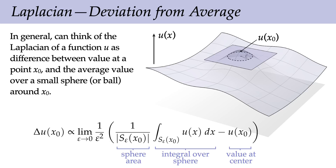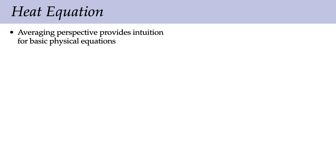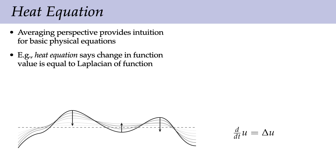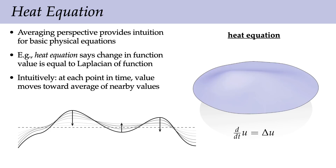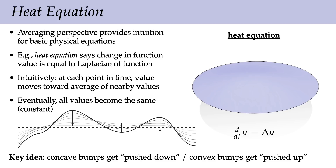This point of view is really helpful for understanding physical behavior. The heat equation says that the change in a function value equals the Laplacian. Intuitively, at each point in time, values move toward the average of nearby values—we keep averaging the function with its local neighborhood over and over again until it becomes completely flat and constant. Concave bumps get pushed down and convex bumps get pushed up until the function is flat.